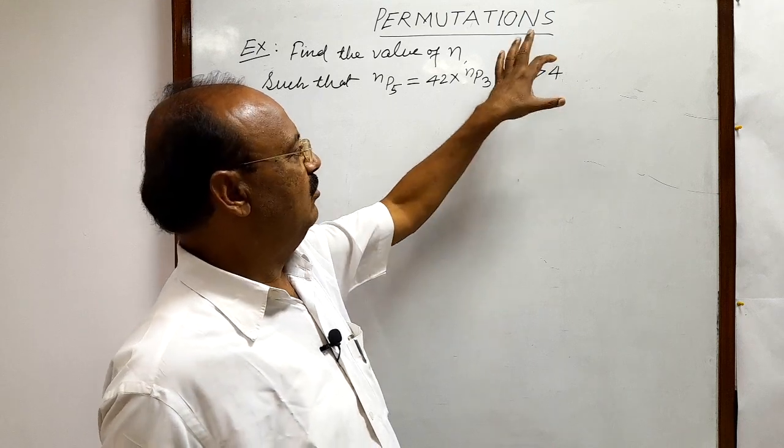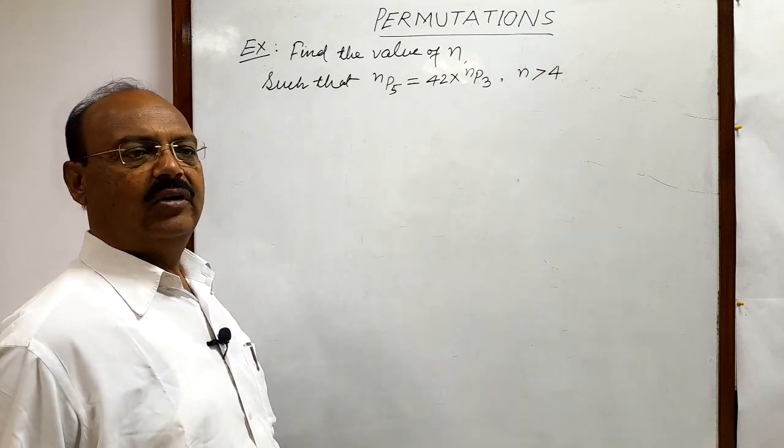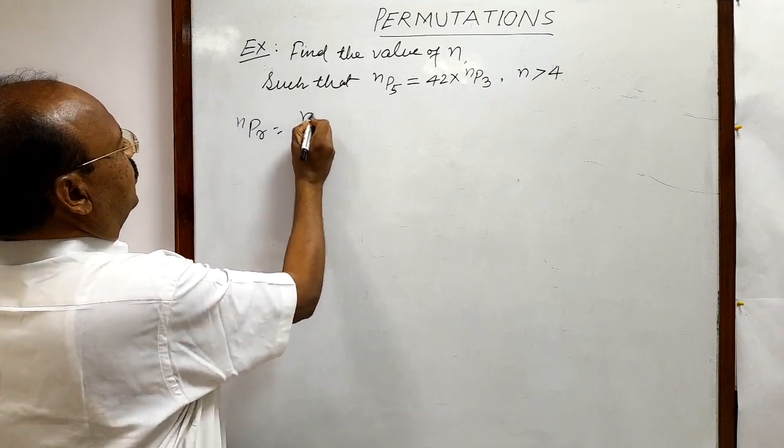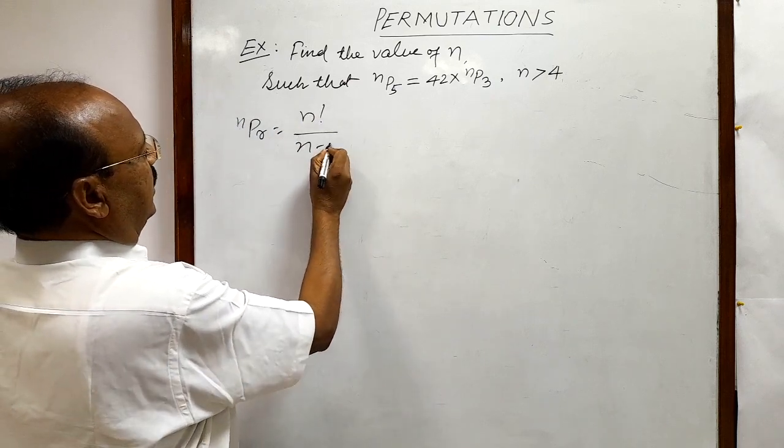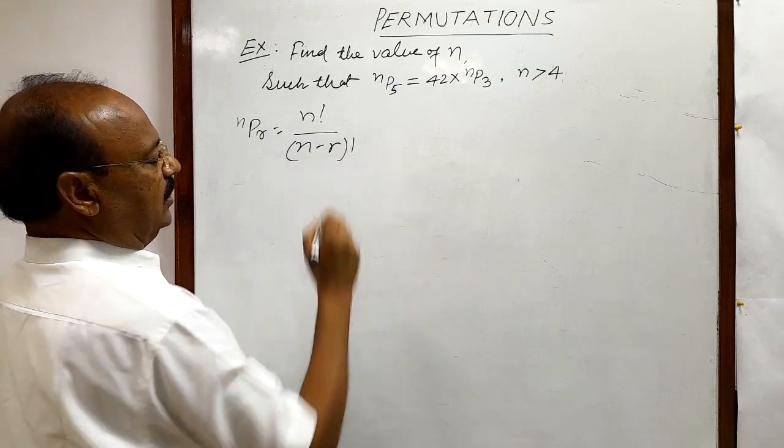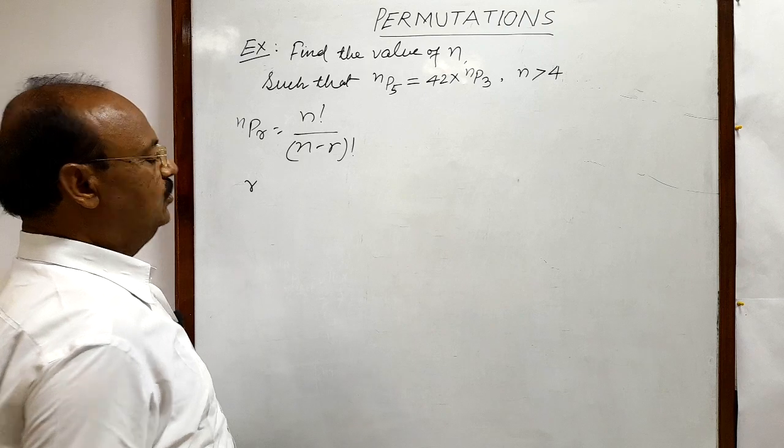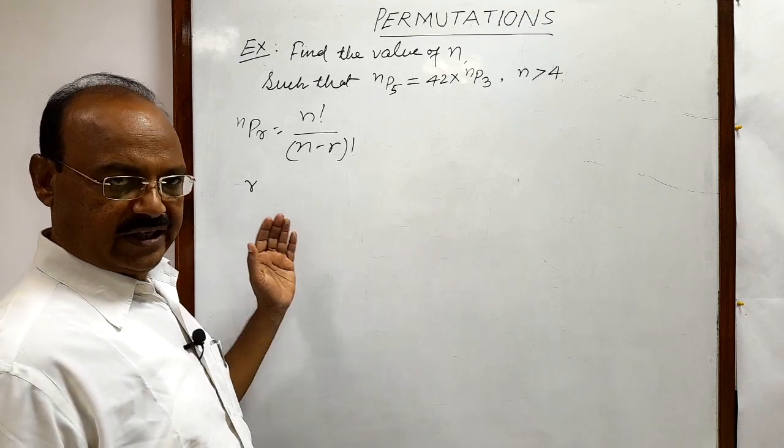Okay, so here we use the formula which we have already discussed in previous videos that Npr is equal to N factorial by N minus R factorial. Here we know that value of R should not be greater than N.